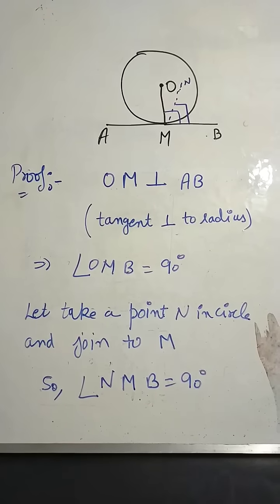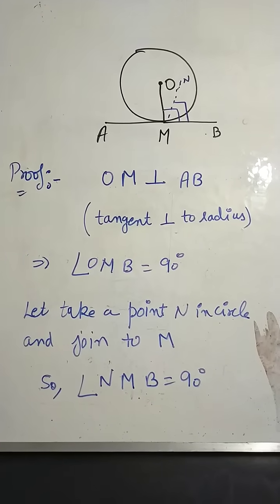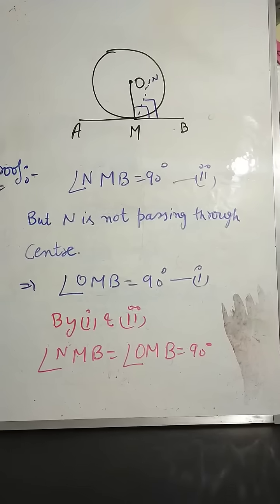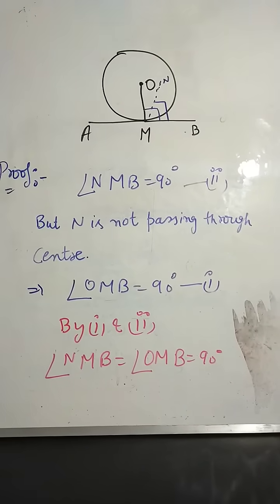Let's take a point N in circle and join to M. So angle NMB is 90 degrees. Assume that. But N is not passing through the center of circle.